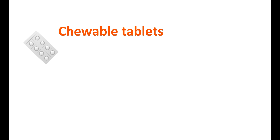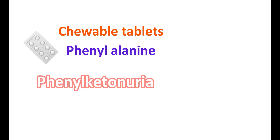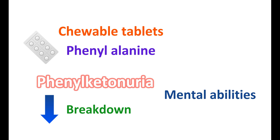Montelukast chewable tablets may contain the amino acid phenylalanine. Normally phenylalanine acts as a precursor for many chemical mediators, but in a few people with genetic disorders, phenylalanine may accumulate, resulting in a condition called phenylketonuria. This is a genetic disorder associated with decreased breakdown of phenylalanine. In such people, elevated levels of phenylalanine may produce symptoms like reduced mental abilities and increased hyperactivity. Therefore, in children with phenylketonuria, use of Montelukast chewable tablets is not recommended.